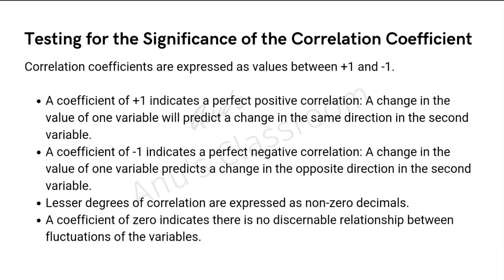The coefficient of correlation generally ranges from minus 1 to plus 1, with 0 indicating no correlation. Positive correlation means an increase in one variable causes an increase in the other; as the coefficient moves closer to 1, the strength of that dependency increases. A coefficient of plus 1 indicates a perfect positive correlation, while minus 1 means perfect negative correlation — any change in one variable will predict a change in the opposite direction in the second. A coefficient of 0 indicates no discernible relationship between the fluctuations of the variables.